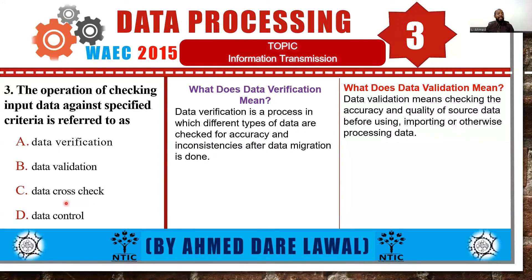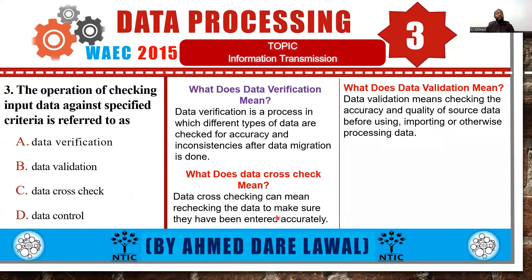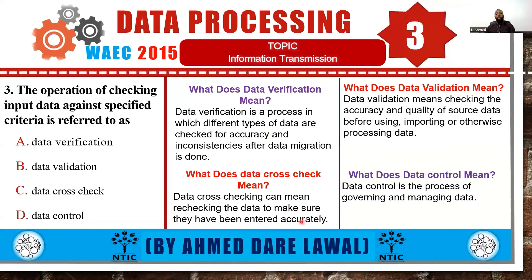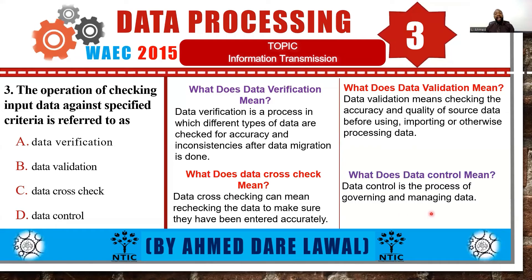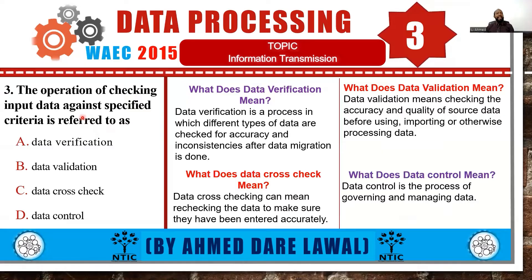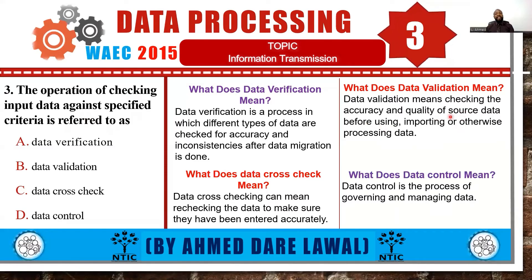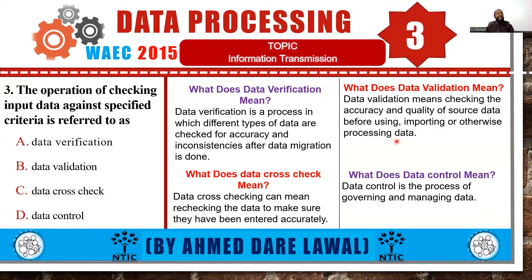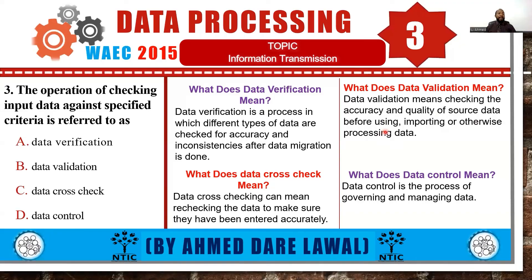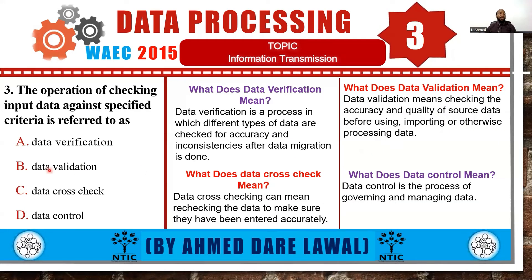Let's look at option C, data plus check, which means rechecking the data to make sure they have been entered accurately. And the last option, data control, simply means the process of governing and managing data. Going back to the question — the operation of checking input data against specified criteria — the answer is data validation, because validation checks accuracy and quality of source data before using or importing it. The system checks whether data complies with the criteria set.